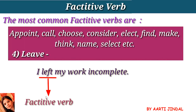The next verb is leave. Example: 'I left my work incomplete.' Here, 'I,' a pronoun, is the subject. 'Left,' the past form of leave, is the verb. 'My work' is the object. 'Incomplete,' which is an adjective, is the objective complement, because this adjective is used to describe the object.